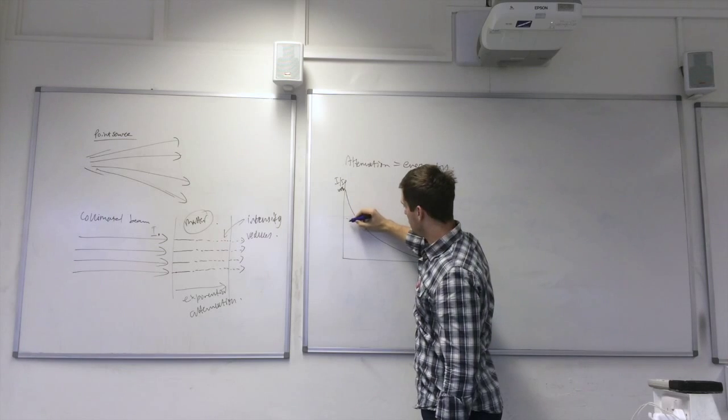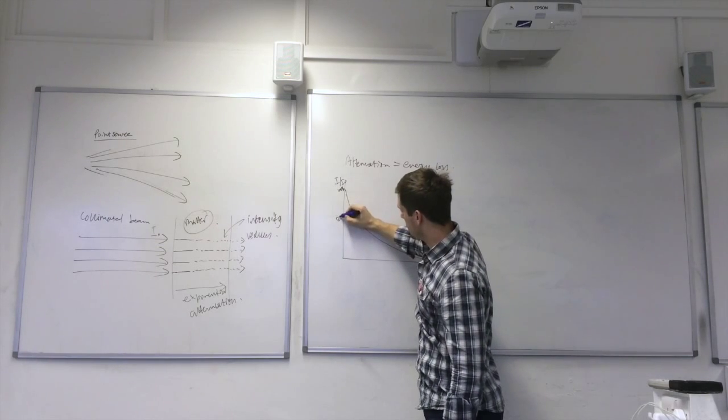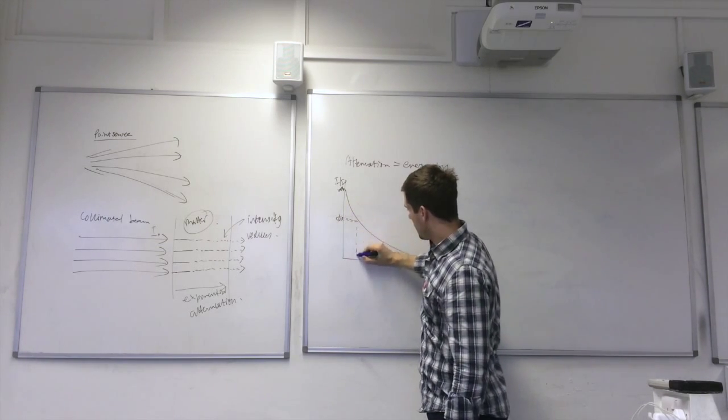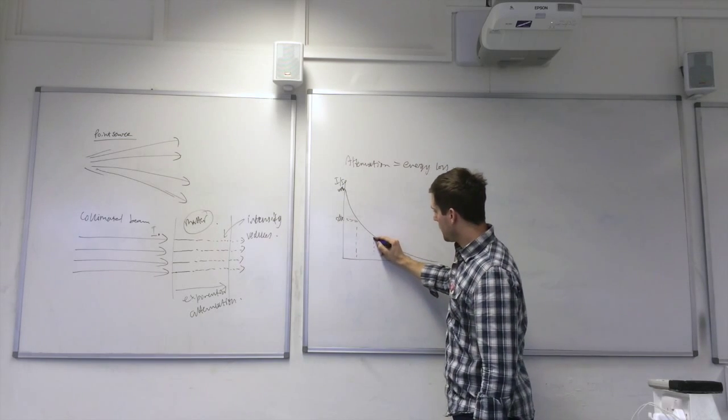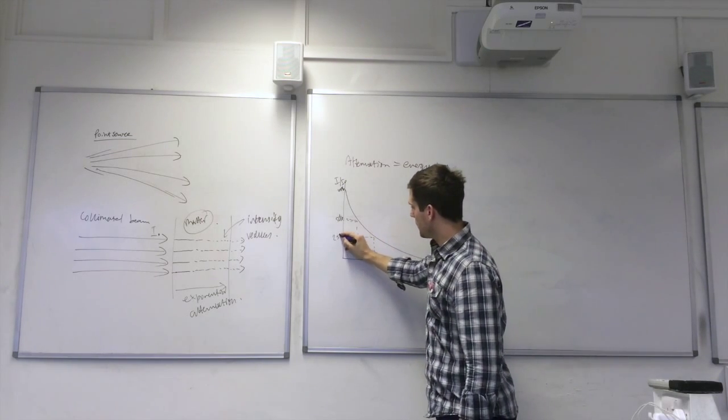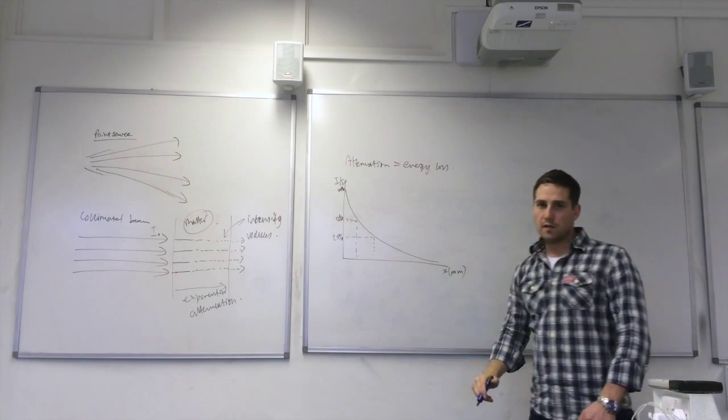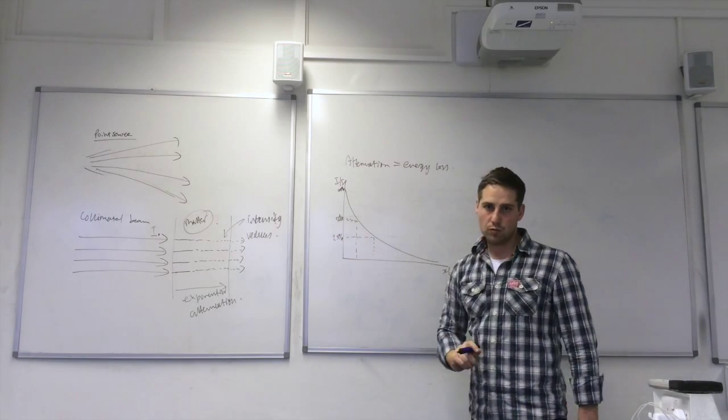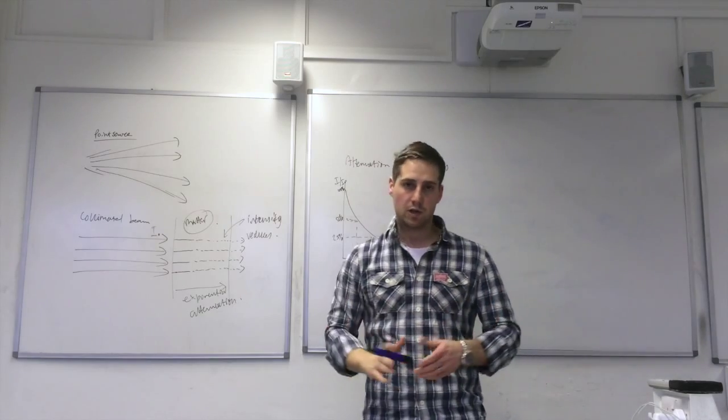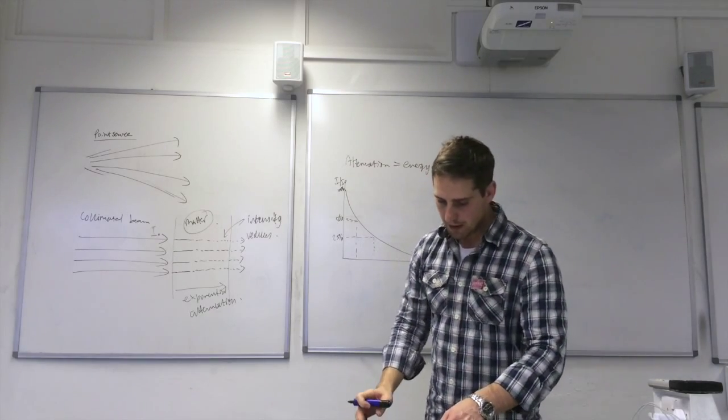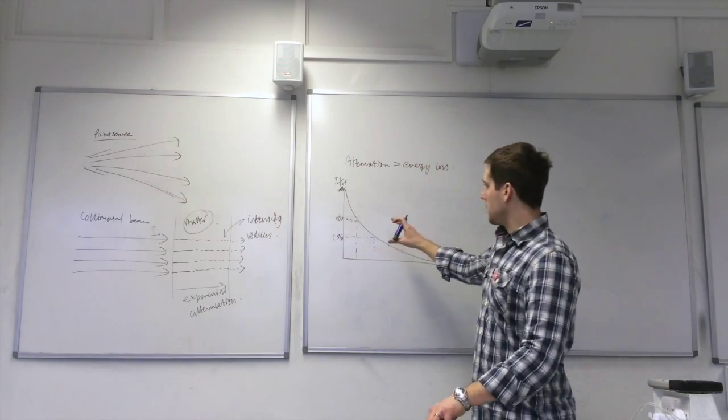So the distance to fall to 50%, and then same distance again, so that would be 25% there. So that's our exponential attenuation. That's for a collimated beam.